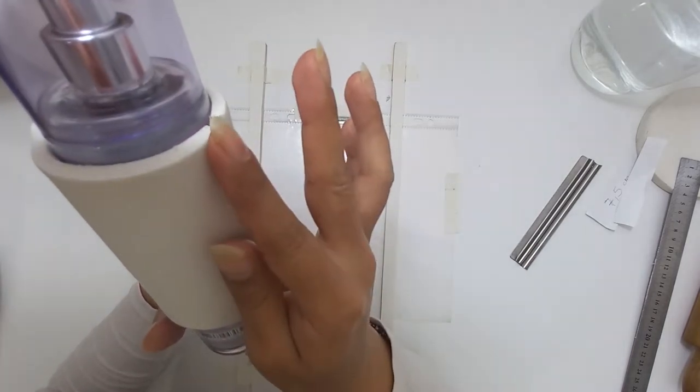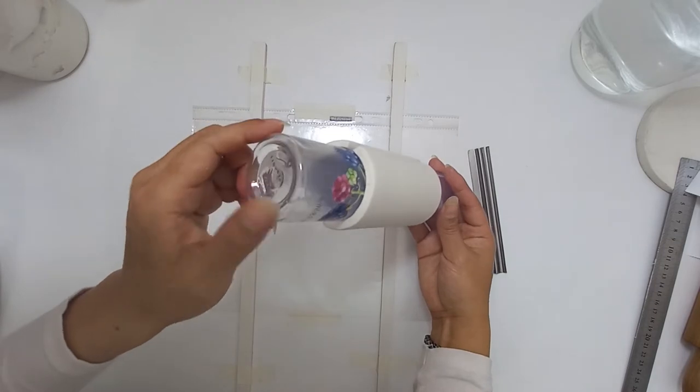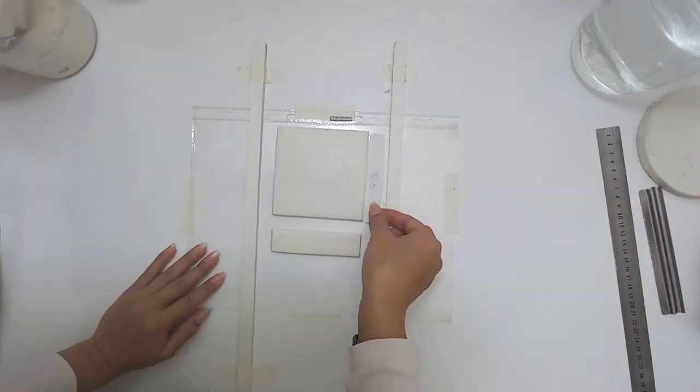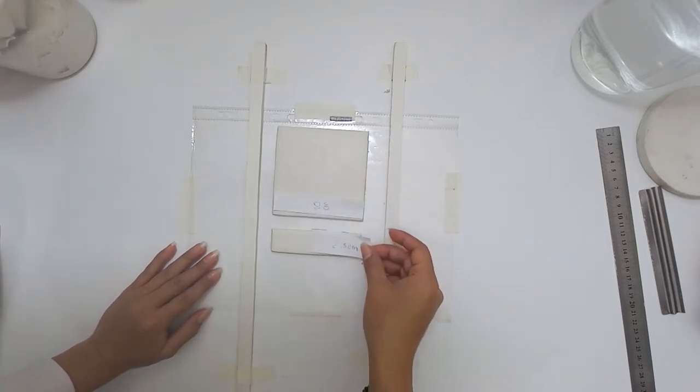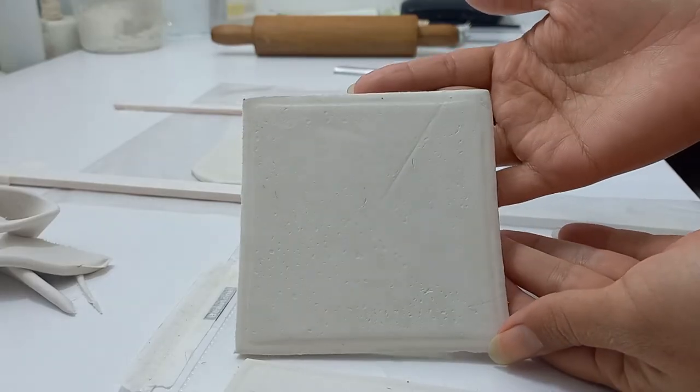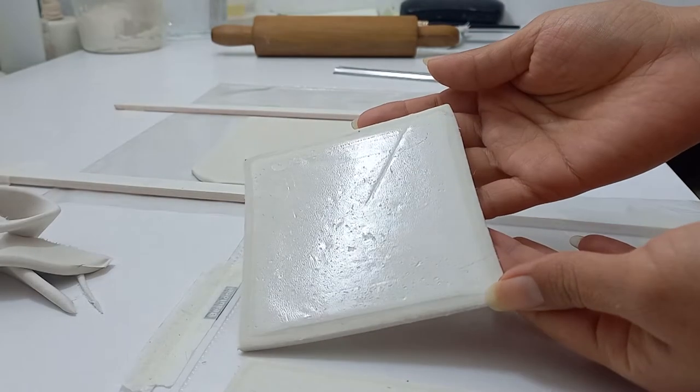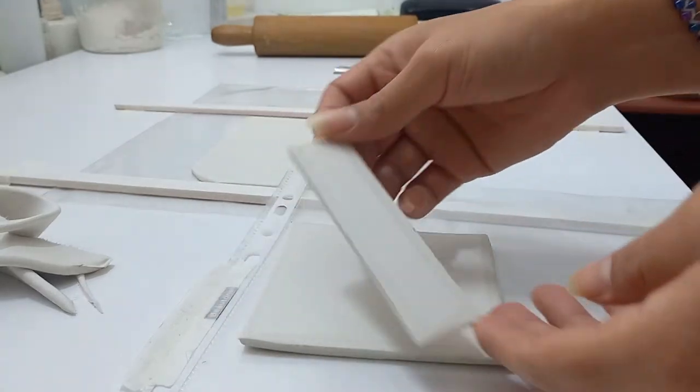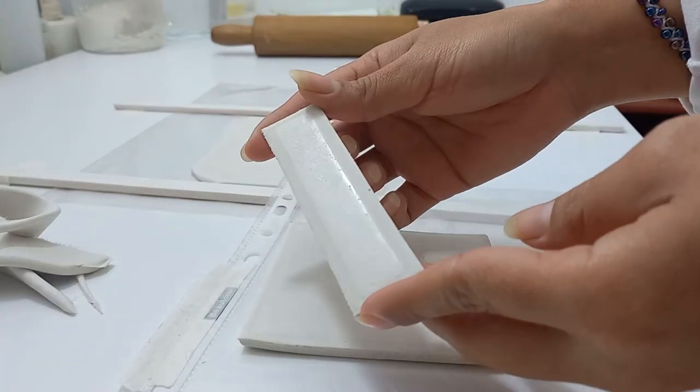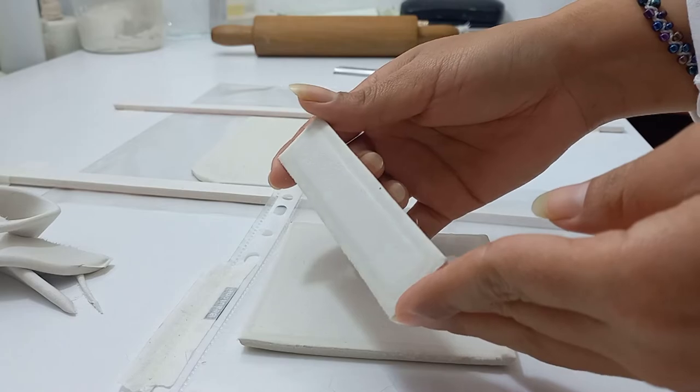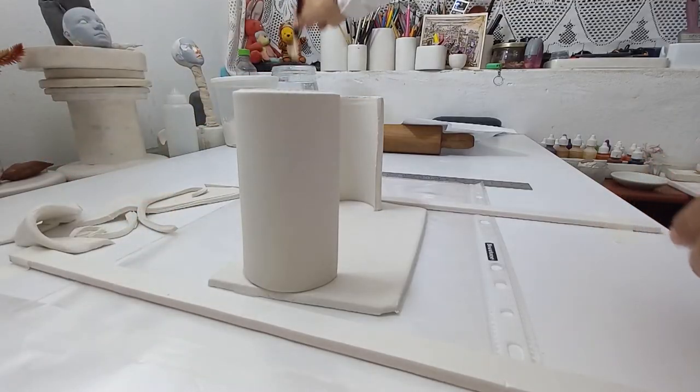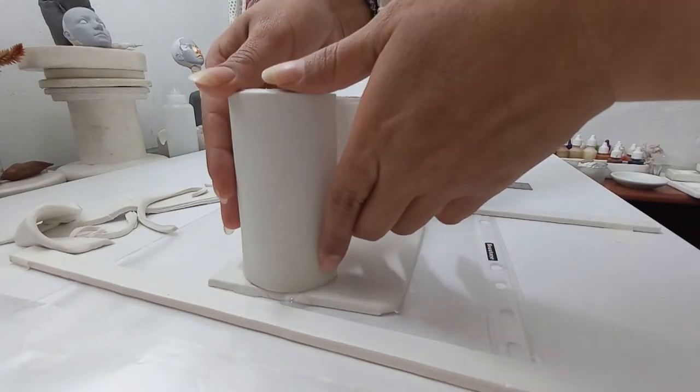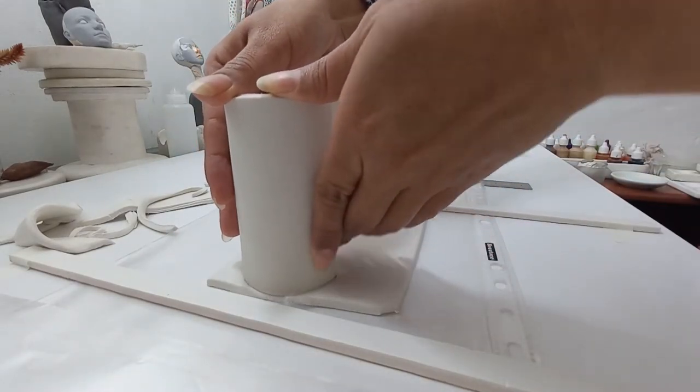Once you're done, let it dry. I made these two parts that are gonna become the back and front of the note holder. This is a 10x10 square for the back part. The front part is 2.5 of width per 10 centimeters of length. We're gonna repeat the same process as we did with our trays.